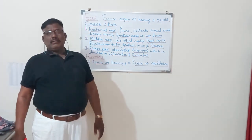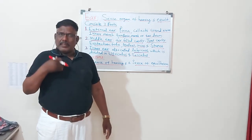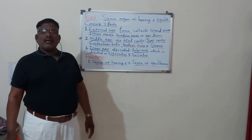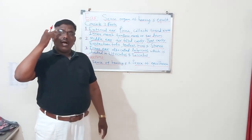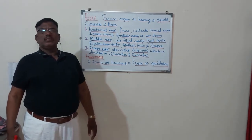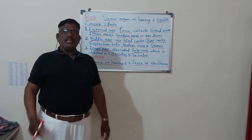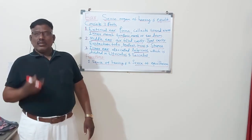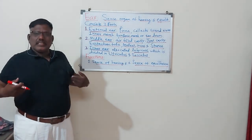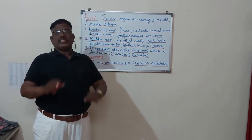So function of the ear is sense of hearing and sense of equilibrium. Dear students, remember, in animal there are five sense organs. That name of those organs are the eyes, ear, nose, tongue, and skin. So eye for the vision formation, sense of the vision; ear, sense of the hearing; nose, sense of smell; tongue, sense of taste; and skin, sense of touch.